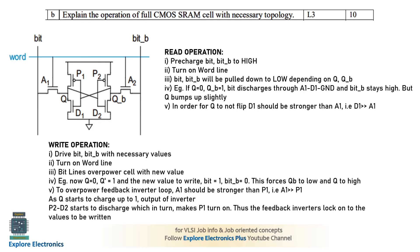The next question is on the working operation of a full CMOS SRAM cell with necessary topology. For a CMOS cell you can write a four-transistor cell or a six-transistor cell — it is better to write both, but here I have given only the six-transistor cell. We have two bit lines — bit and bit-bar — and a word line horizontally, along with six transistors required to store the data.